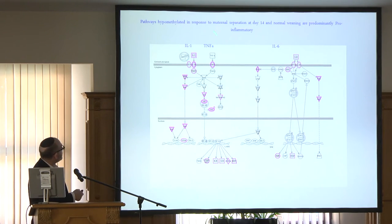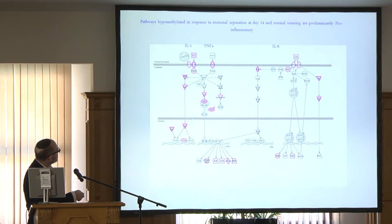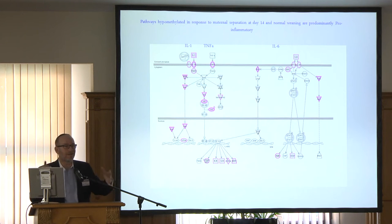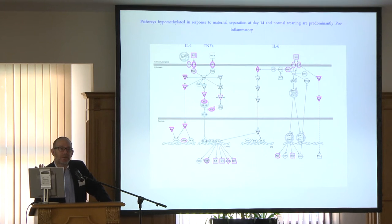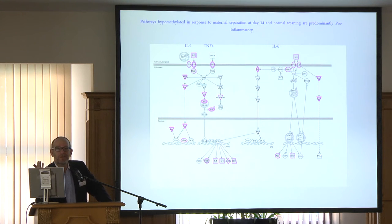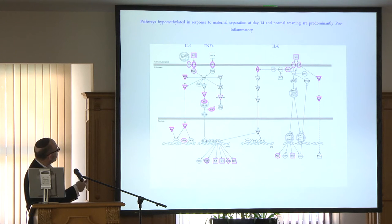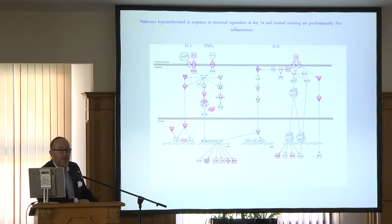Looking at the pathways affected at day 14 and normal weaning, you get the usual suspects of pro-inflammatory pathways involved in many diseases. There are almost common elements in all human disease — pro-inflammatory pathways are already involved in almost every human disease from behavioral pathologies to cancer. They all involve an inflammatory system response that seems to be activated normally when you lose a mother, and also when weaning happens unnaturally.